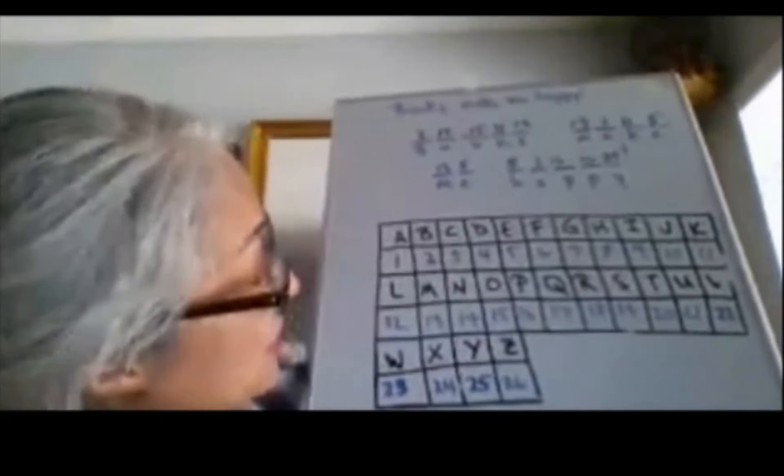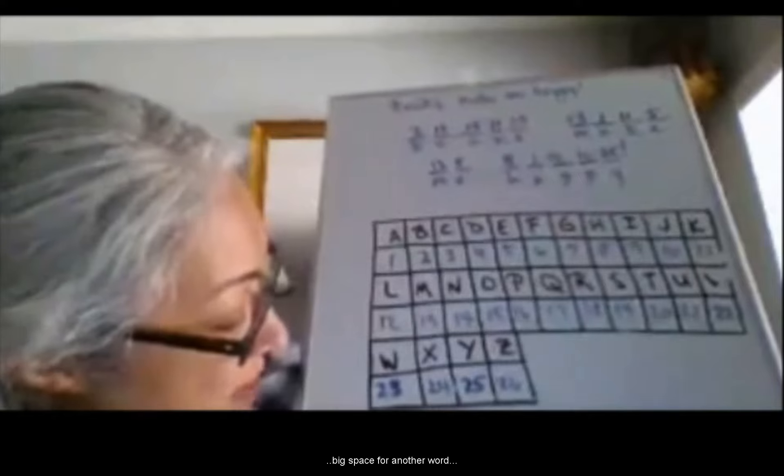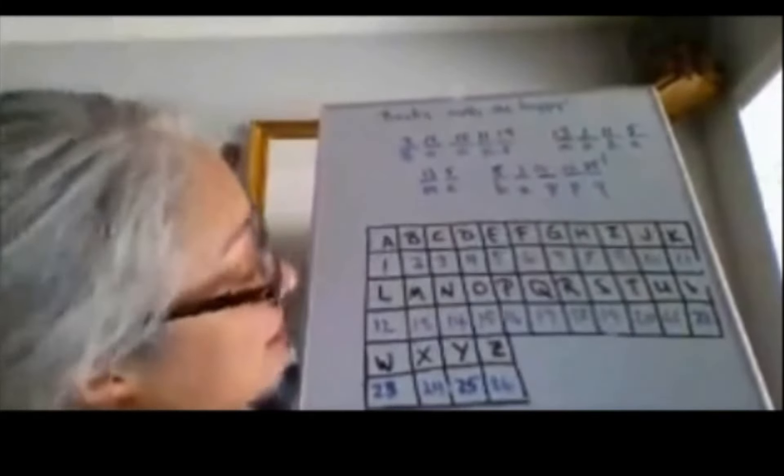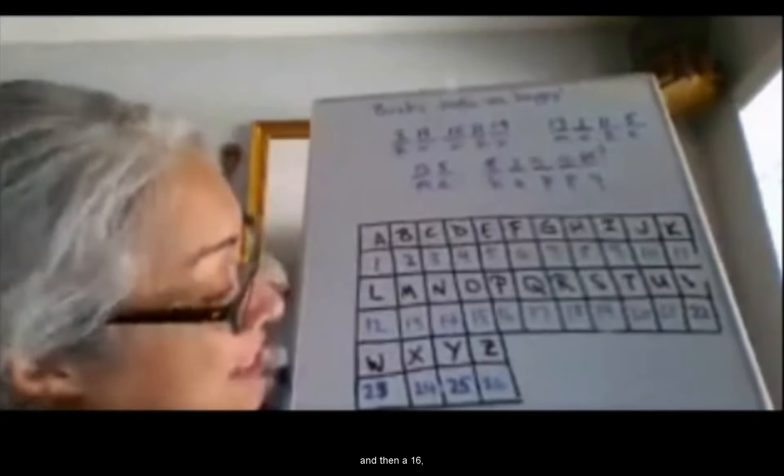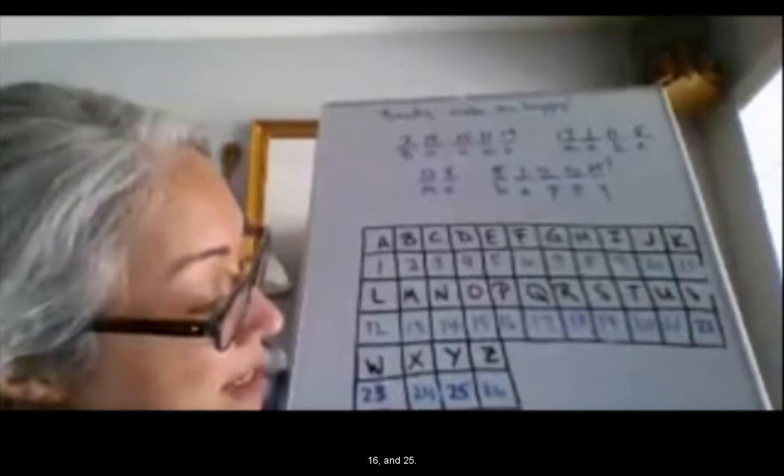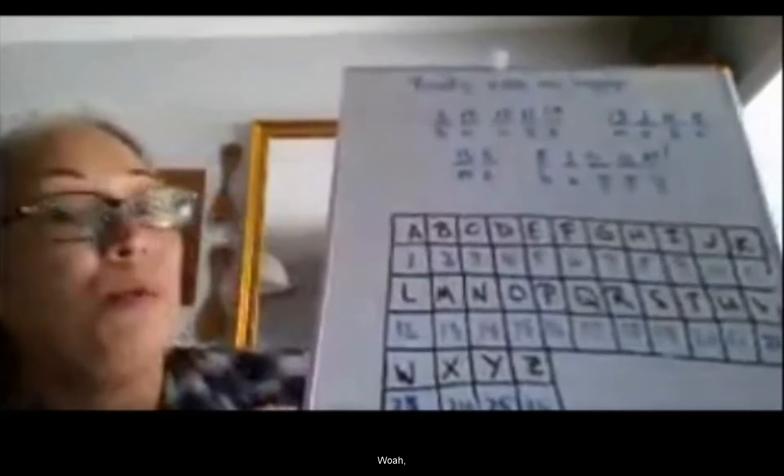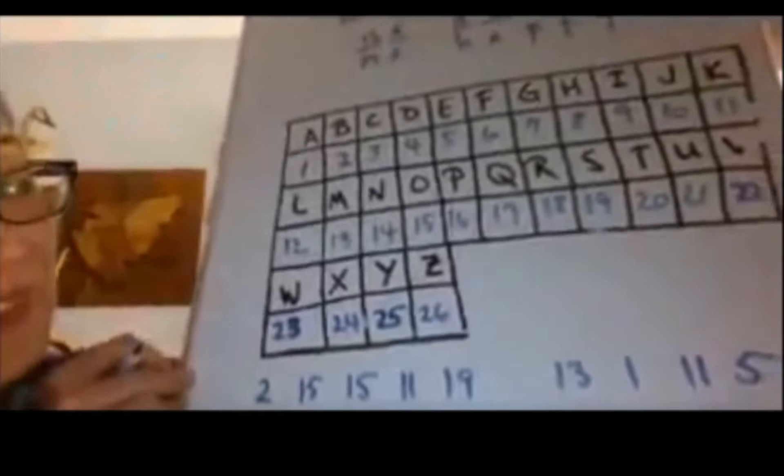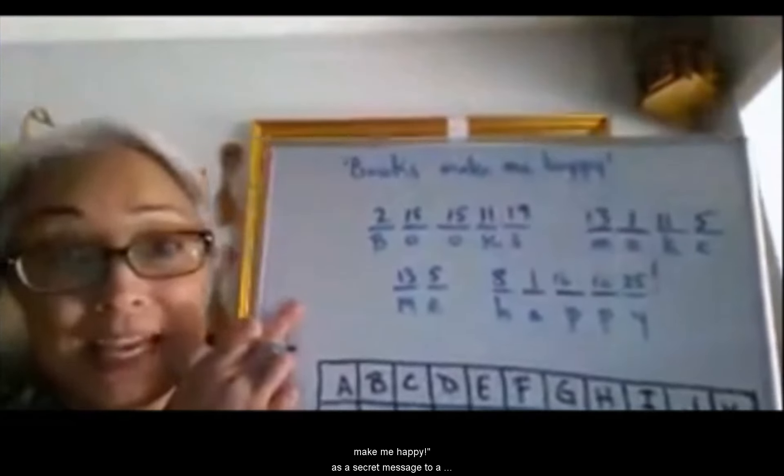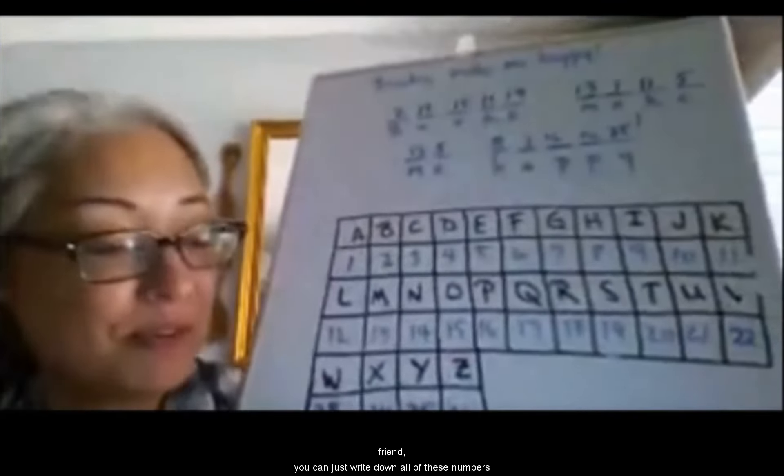The next line, we have 13, 5. Big space for another word. 8, and then a 1, and then a 16, 16, and 25. Whoa. Isn't that cool?